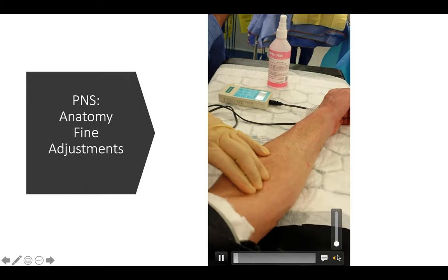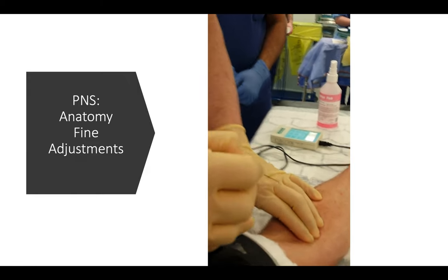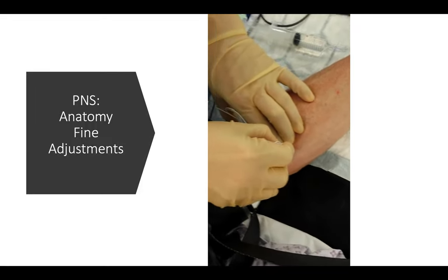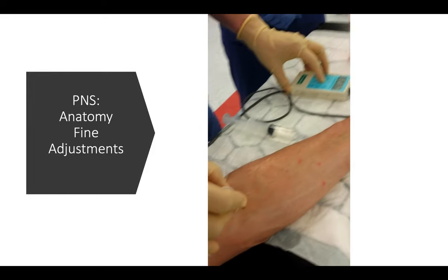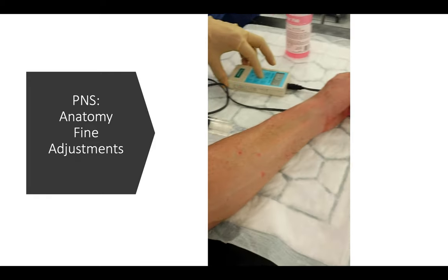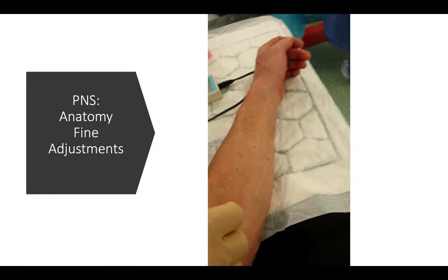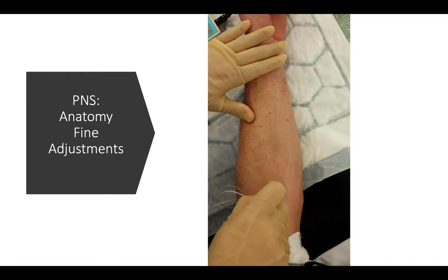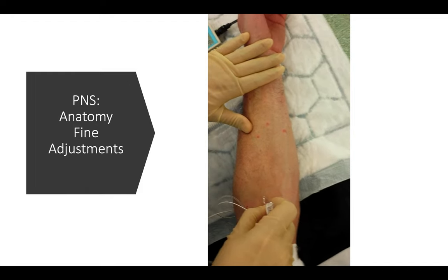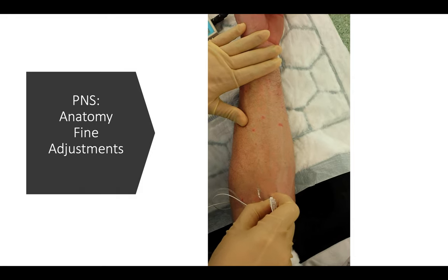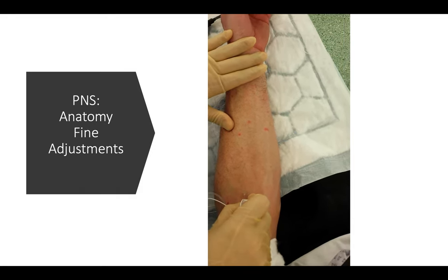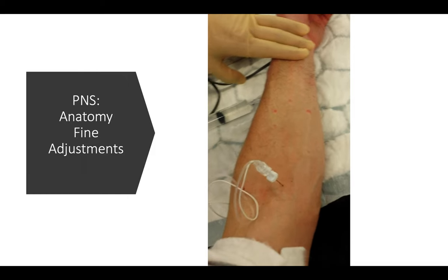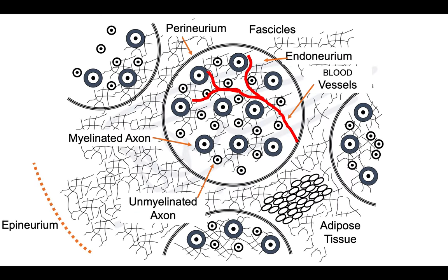With peripheral nerve stimulation, it's important to know the anatomy, where the nerves are located, the landmarks, and you may need fine adjustments to get the precise response you're looking for. Know your nerve stimulator settings and how to make fine adjustments. In a median nerve block at the elbow, you can see how the needle is manipulated — moving medially or laterally by just 5 to 10 millimeters to achieve the desired response.